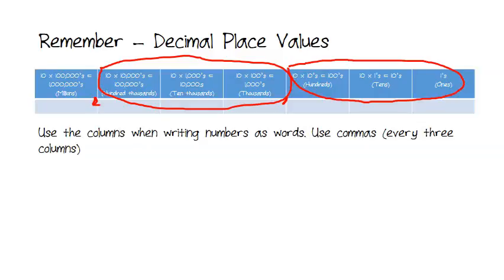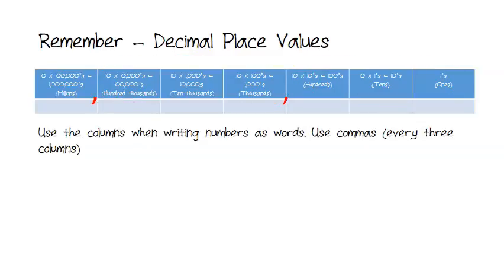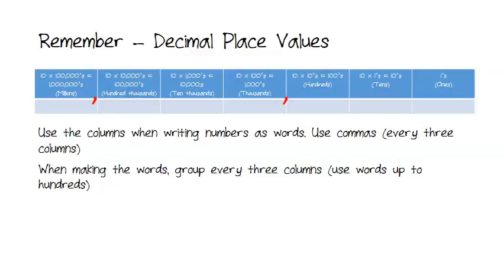So, that's how we get the commas there, by grouping the columns into groups of 3. And then we use that to write the numbers as words. Let me just erase those circles so we can see them all clearly. So, when making the words, we group every 3 columns.